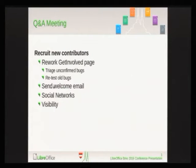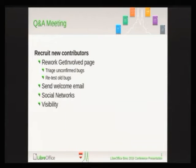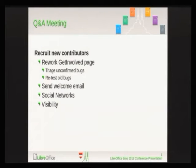I'm Cisco from QA. I'd like to talk about a couple of topics we covered during the QA meeting at the Hackfest. First, we discussed how to get more contributors to the QA team. Inspired by what Jan has done mentoring new developers, one idea is to rework the Get Involved page with easy-to-follow steps. Triaging unconfirmed bugs could be a good entry point, and also retesting old bugs to see if they are already fixed.